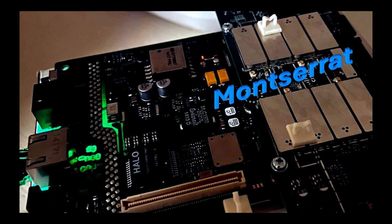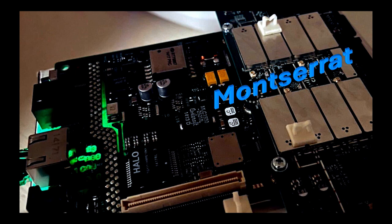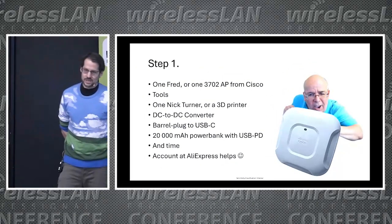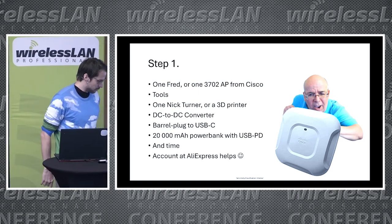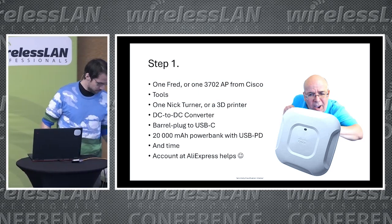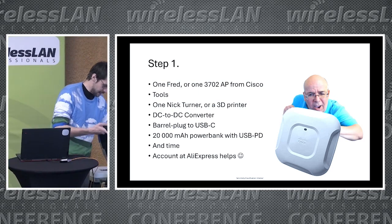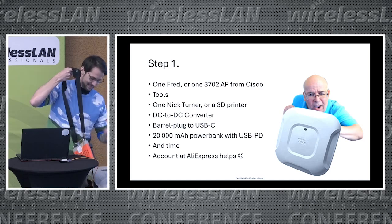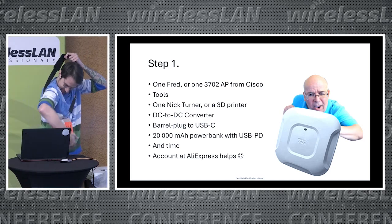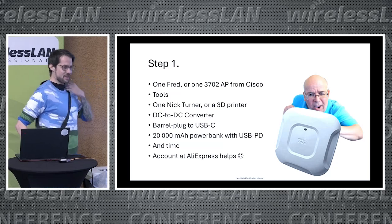Jim said he would. So we need a 3702 release one tool — we need one Nick Turner to make the 3D print. I need a DC to DC converter, barrel plug to USB-C, and we end up with this gadget.